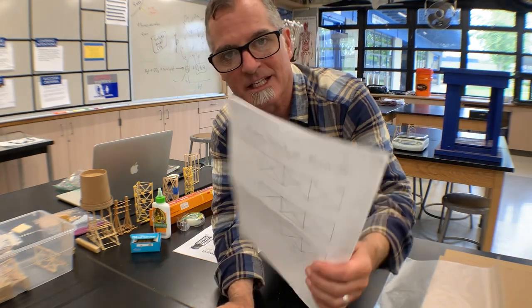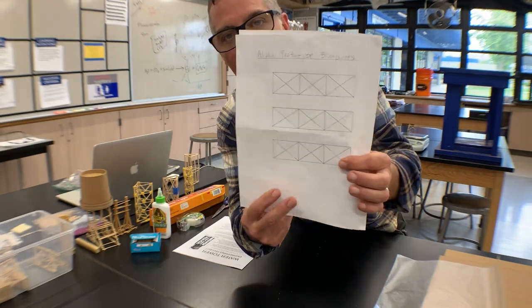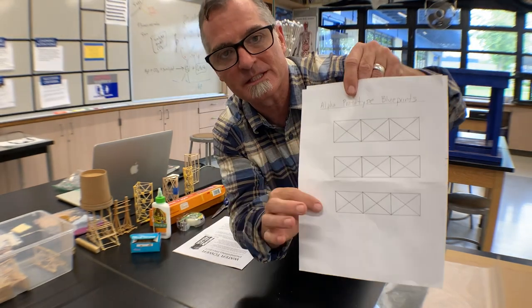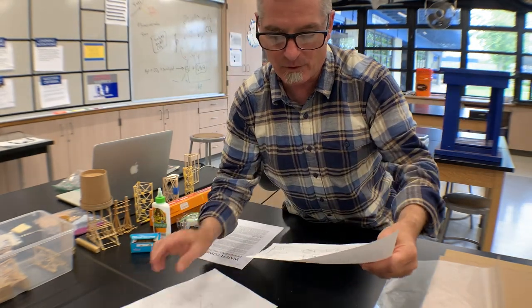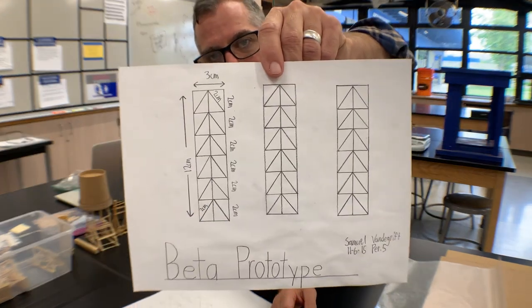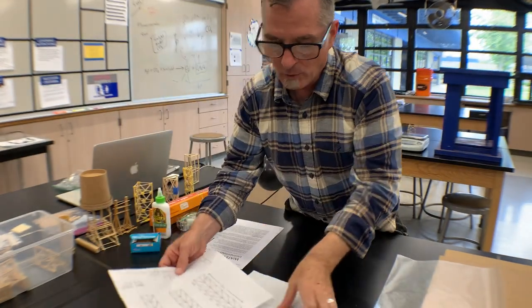So here's just some basic blueprints of an alpha prototype. Remember alpha is your first prototype. It's got three sides on it. There's another one a little more complex here.